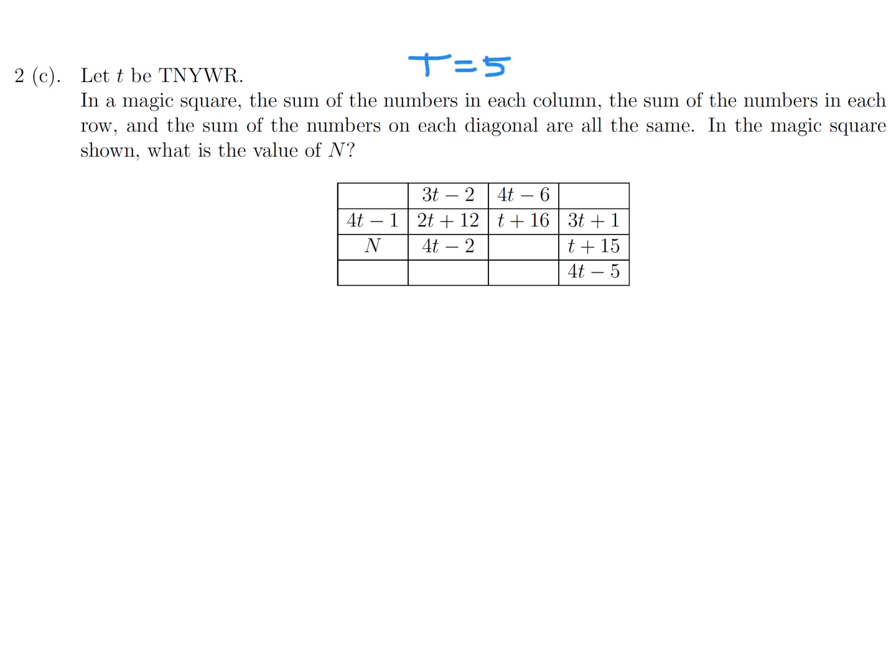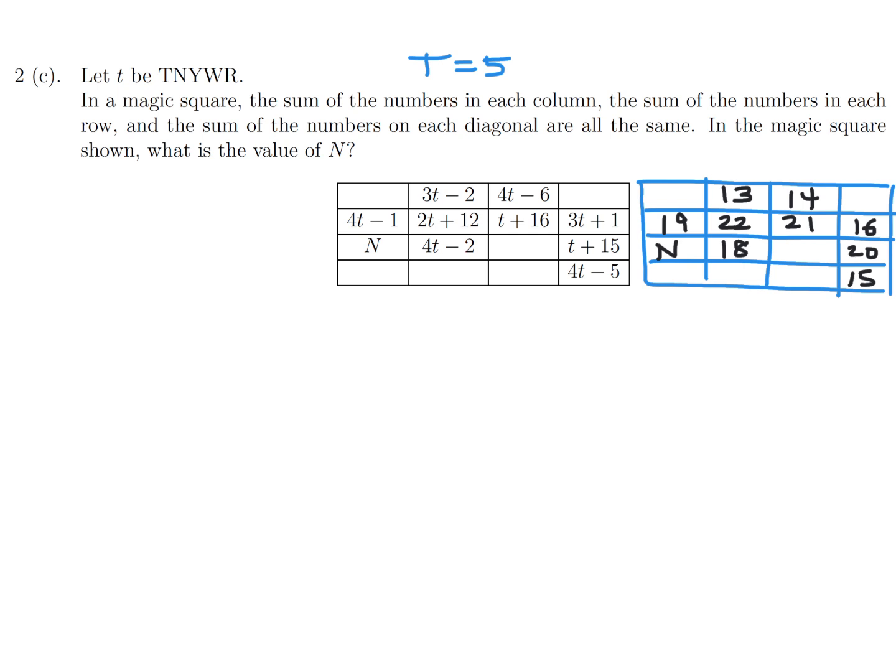T is equal to 5. In the magic square, the sum of the numbers in each column, the sum of the numbers in each row, and the sum of the numbers on each diagonal are the same. In the magic square shown, what is the value of n? Okay. Well, the first thing I'd like to do is let's just put in the actual numbers instead of working with t's. That will make my life easier, I think. So let's plug in t equals 5. And if I do, I will get 13, 14, 19, 22, 21, 16. Now that's just n. We don't know yet. 18, 20, and 15. All right. So let's see. Well, first of all, let's figure out what is that magic sum. So 19 plus 22 plus 21 plus 16. And that will give me the magic sum that I am going to be working with. And that is 78. So everything adds up to 78.